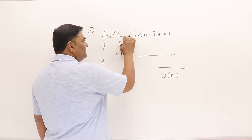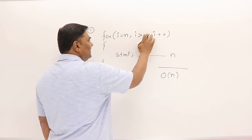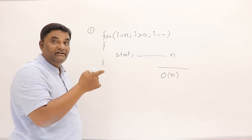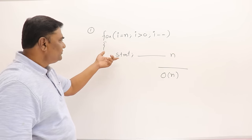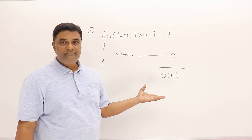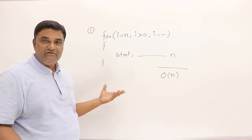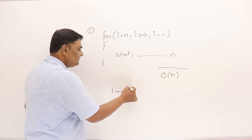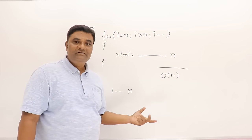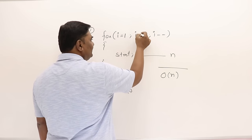Next, suppose this loop starts from n and the condition is greater than 1 or 0, and i is being decremented. Even then, this statement will execute for n times and it is O(n). Whether you go from 1 to 10 (10 steps) or from 10 to 1 (also 10 steps), it is the same number of steps. So a decrementing loop is also O(n).